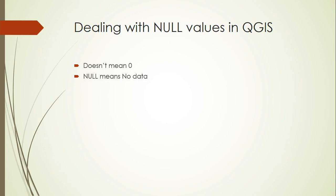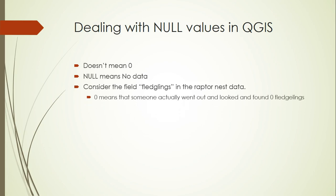To help motivate a way of thinking about this, let's consider the field fledglings in the raptor nest data. Zero means that somebody actually went out and looked at the nest and found zero fledglings — that's a real value. Null means that nobody even looked, and we have no idea what the value should be. It could be zero fledglings, it could have been a thousand fledglings. We don't know because we didn't see. So if you're doing averaging or things like that, you want to include the value of zero, but you don't want to include null values.